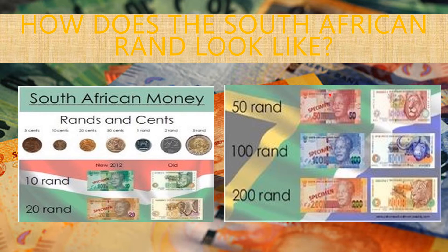The next one is a 50 Rand note. It's red in colour. It also has Nelson Mandela and the number 50 on it. At the back, both the old one and the new one have a lion.